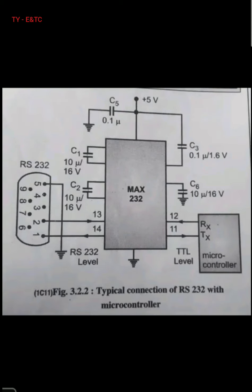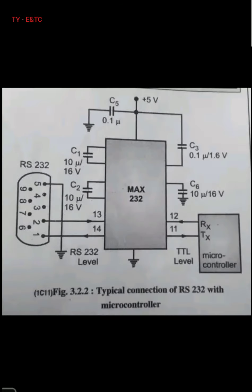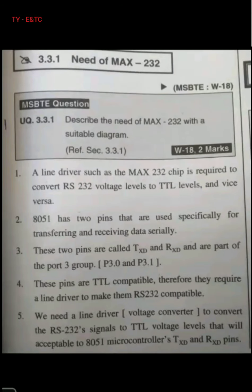For the exam, you may be asked to draw a labeled interconnection diagram between RS-232 and the 8951 microcontroller. This connection diagram showing the DB9 connector, MAX-232 IC, and microcontroller on either side is important to remember and is a likely 4-mark question.